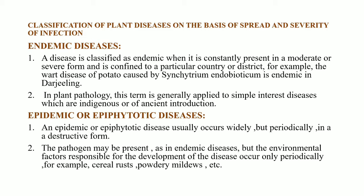In this slide we can observe the classification of plant diseases based on the spread and severity of infection. There are four types: endemic, epidemic, sporadic, and pandemic. Endemic diseases are those which are constantly present in a moderate or severe form and are confined to a particular country or district. For example, the disease of potato caused by Synchytrium endobioticum is endemic in Darjeeling.